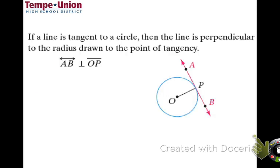There's a key relationship whenever a line is tangent to the circle: the radius to that point is perpendicular to the tangent line. So you can always create a 90-degree angle there. This is stated as: line AB is perpendicular to segment OP, which is the radius of the circle.